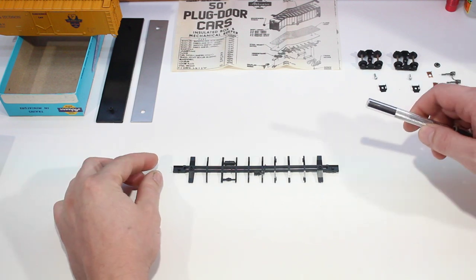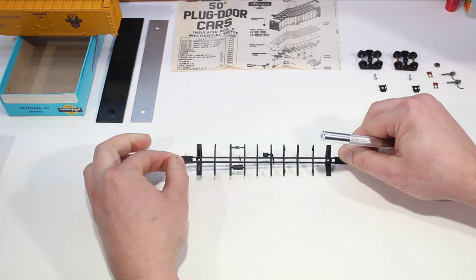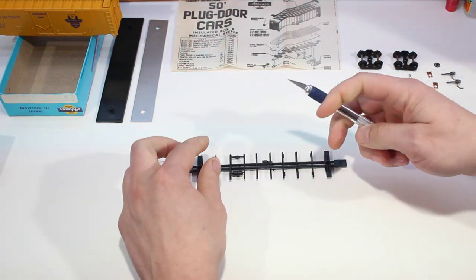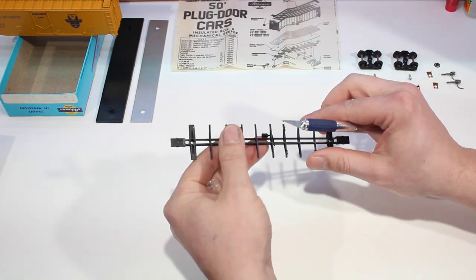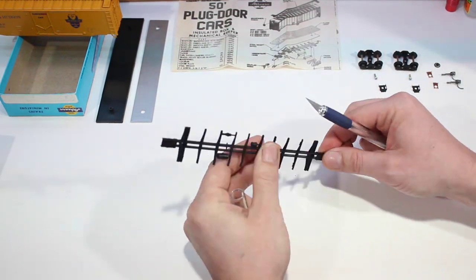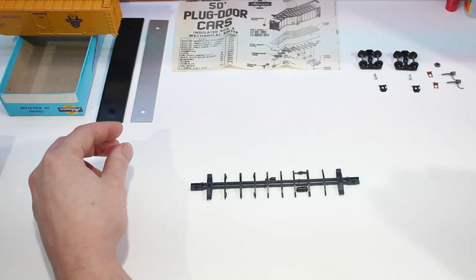We are going to start off with our underframe. The first thing we need to do is go over the underframe and check to make sure that there is no flashing or anything sticking up that will get in the way.